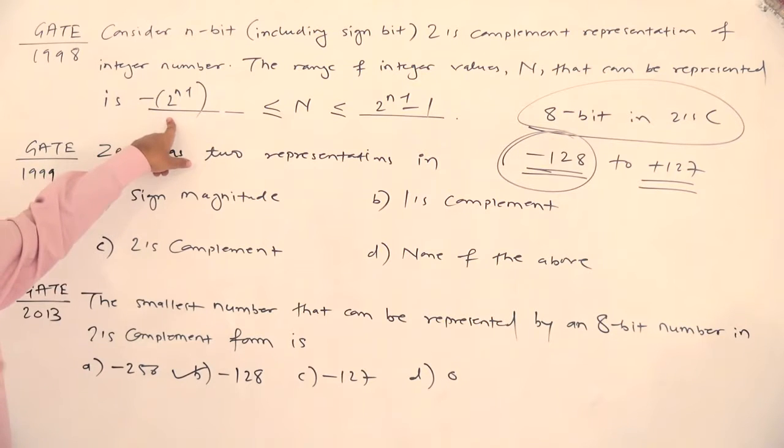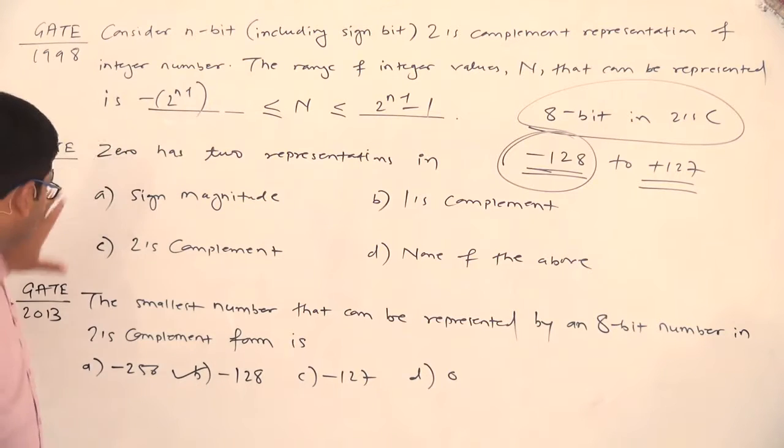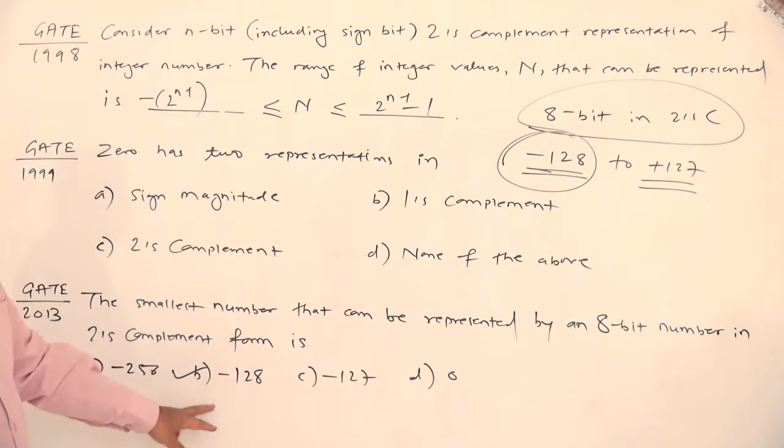So, in short, it is objective right now, earlier it was subjective. So, for GATE 2013, the answer will be minus 128.